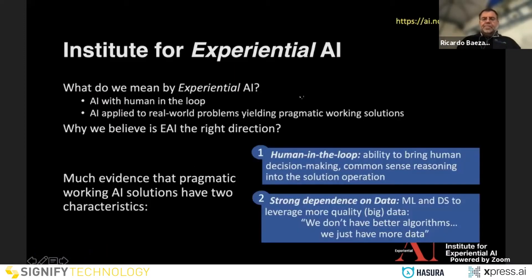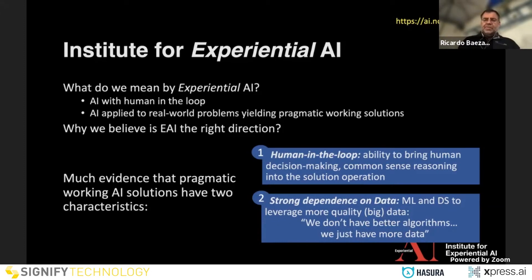I want to mention this new institute from Northeastern in experiential AI that basically wants to uncover what was important in successful AI applications — like having humans in the loop, or better, humans in control — and also the strong dependency on data instead of better algorithms, and usually big data when most companies have small data.